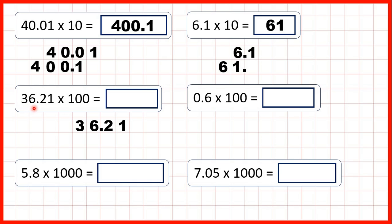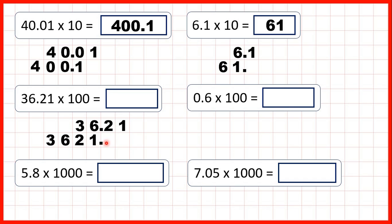Now we have 36.21, so we write the number out and copy down the decimal point, but this time we're multiplying by 100. Multiplying by 100 is the same as multiplying by 10 and then by 10 again, so digits move 2 squares to the left. Copying each digit 2 squares to the left gives us 3621, and since the decimal point is on the end, our answer is the whole number 3621.